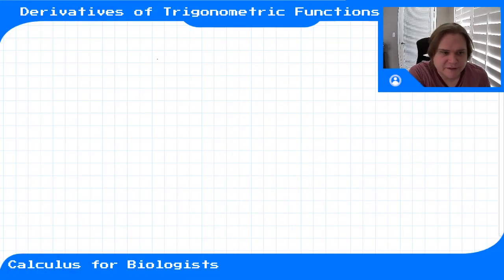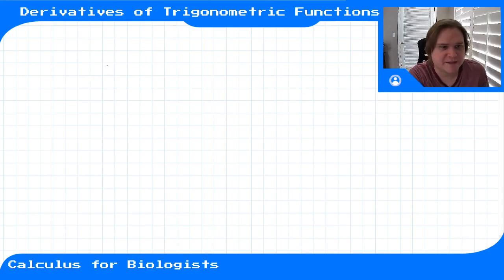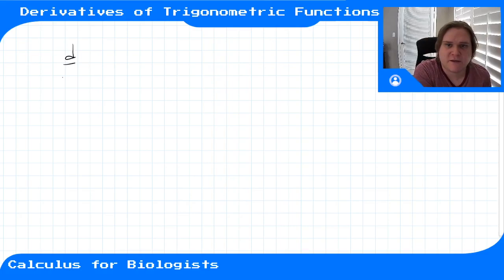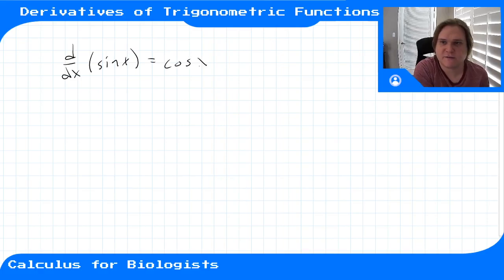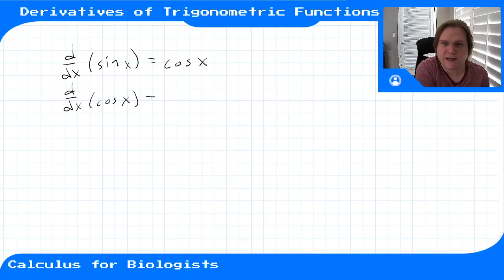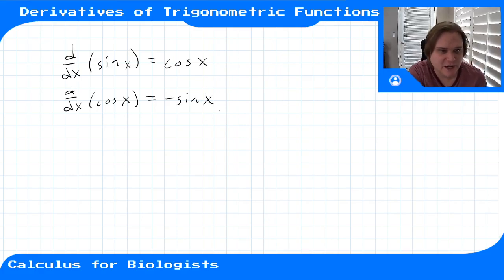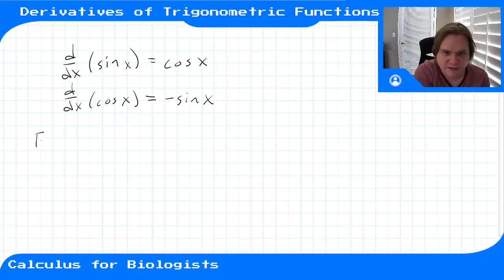With the derivatives of sine and cosine in hand, we can take the derivative of basically any trigonometric function. Recall that the derivative of sine of x is cosine of x, and the derivative of cosine of x is minus sine of x. With these two derivative rules, we can compute the derivative of any trigonometric function.